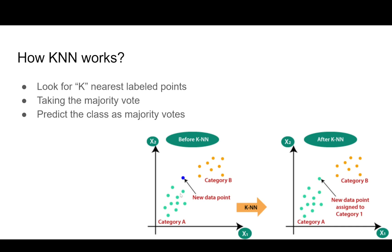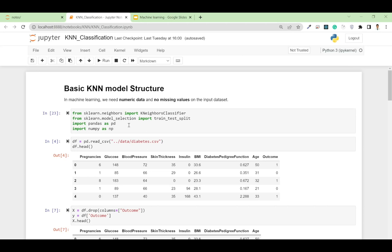If you look at this figure, let's say we have two categories: category A and category B. We add a new point somewhere in the middle of the two categories. If we take the value of K as 2, that means we only consider the nearest two points. This blue point is closer to the green points than the yellow points, so it will automatically be categorized into category A. That's how KNN works.